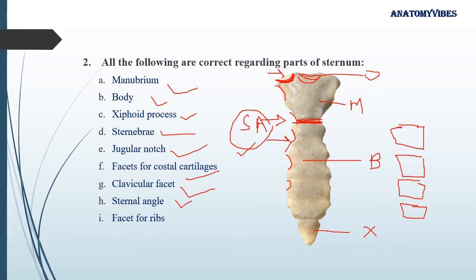Regarding facets for ribs — ribs do not articulate directly with the sternum. Ribs always articulate via their costal cartilages to the sternum. So 'facet for rib' is an incorrect statement.